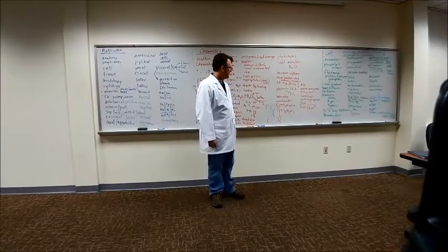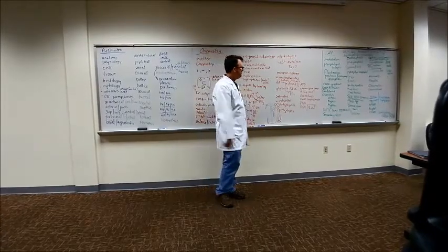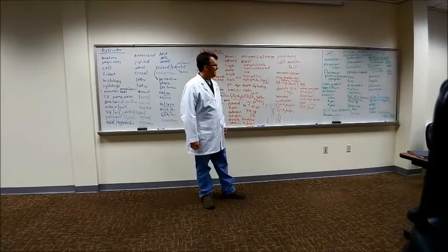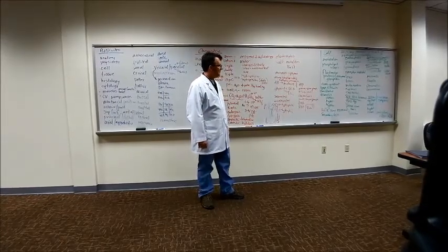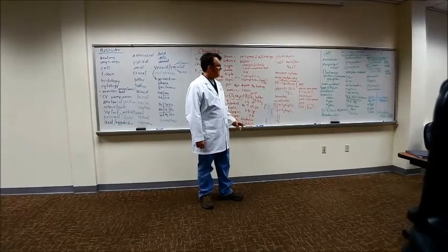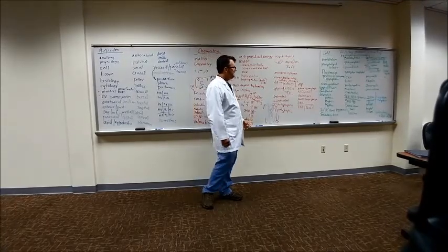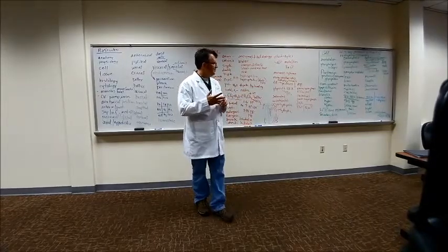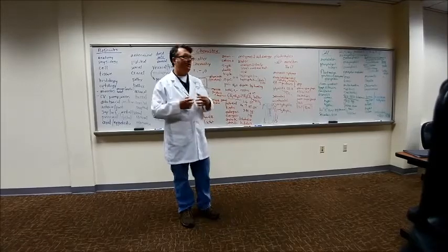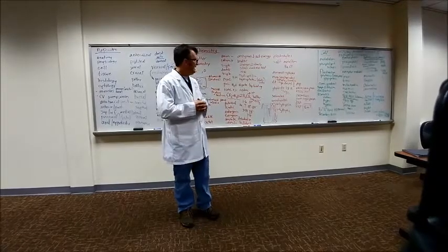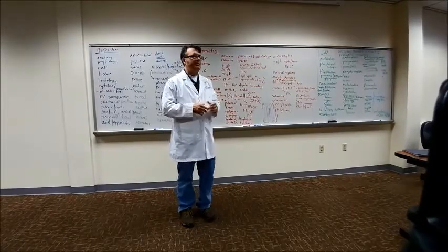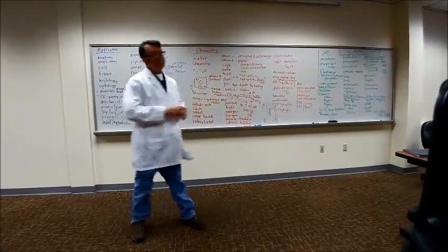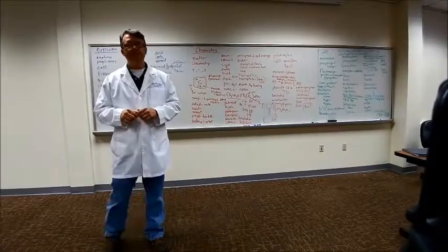Remember that ATP is made out of adenine, ribose, and phosphate. DNA is made out of adenine, thymine, guanine, cytosine bases. Nucleotides, which are made of a base, a sugar, and a phosphate, are the repeating units of DNA and RNA. Remember that RNA has uracil but not thymine. So that concludes our brief review of chemistry.